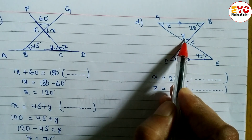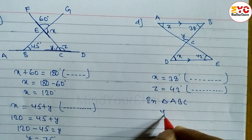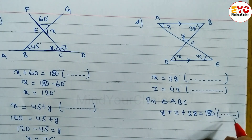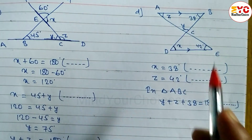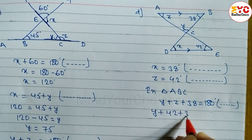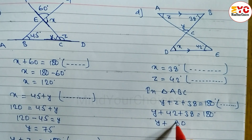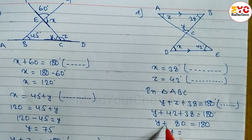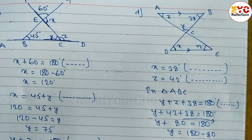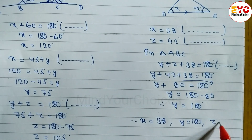After this, to find out the value of y, in triangle ABC: y plus z plus 38 is equal to 180 degrees — reason: the sum of angles of the triangle. Substituting z equal to 42: y plus 42 plus 38 is equal to 180. Y plus 80 is equal to 180, so y is equal to 180 minus 80. Therefore y is equal to 100 degrees. So x is equal to 38, y is equal to 100, and z is equal to 42.